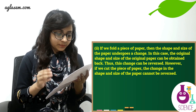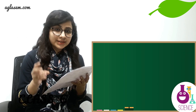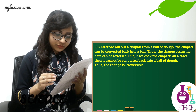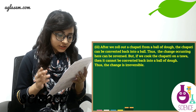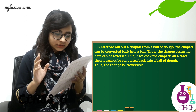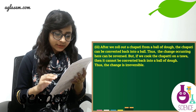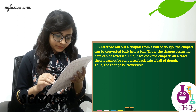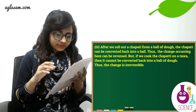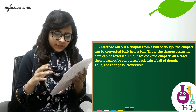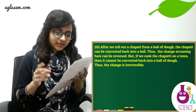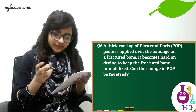Third example: after we roll out a chapati from a ball of dough, the chapati can be converted back into a ball — so the change occurring here can be reversed. But if we cook the chapati on a tawa, it cannot be converted back into a ball of dough, so that change is irreversible.